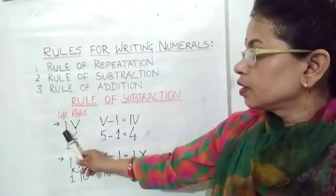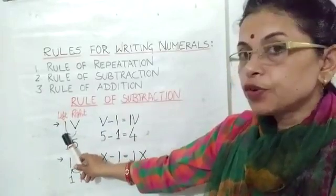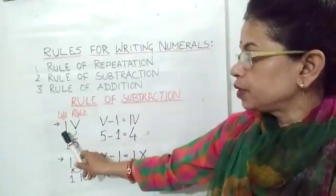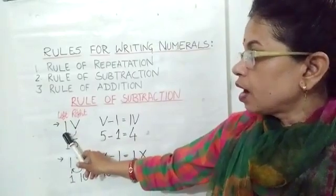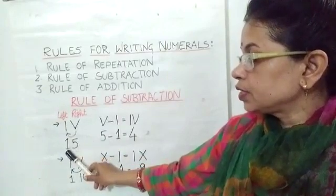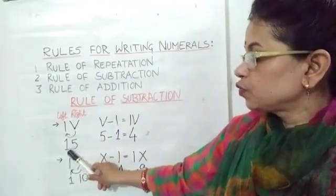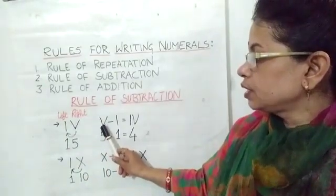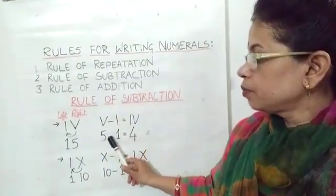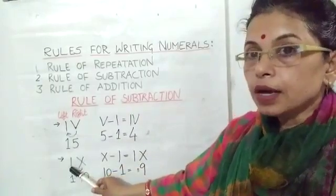Rule of subtraction. In this we write a smaller number to the left side of a bigger number which is then subtracted from the bigger number. For example, IV: I is written to the left side of V, which represents 1, and V represents 5, which is a bigger value. So we subtract 1 from 5 and write it as V minus I, which becomes IV, and 5 minus 1 which is equal to 4.